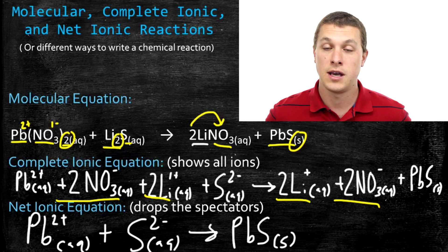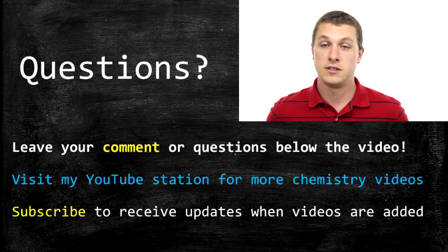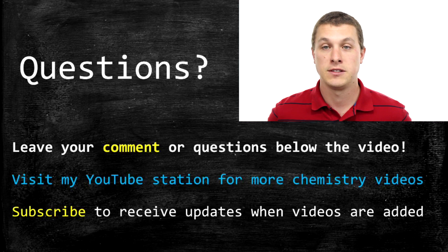So those are our complete molecular and net ionic equations — just different ways to express the chemical reaction. The molecular equation tells you what molecules are involved. The complete ionic equation tells you what ions everything breaks apart to in solution. And the net ionic equation highlights the chemicals that are actually changing during the reaction. Thanks for watching this episode of Real Chemistry — please leave questions below and subscribe for future videos.